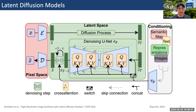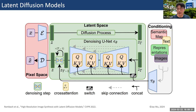The latent diffusion model is a family of diffusion models that operates the diffusion process in latent space instead of pixel space. This latent diffusion model encodes the original pixel space to a compressed latent space, which can save a lot of computational cost. It also allows different kinds of conditioning using cross-attention mechanisms.